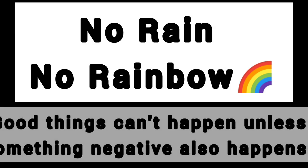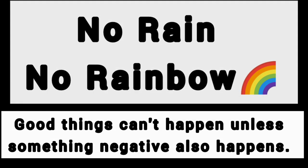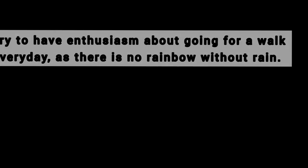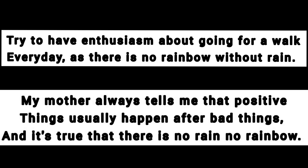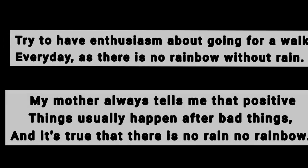The next expression is 'no rain, no rainbow' — and this one is my favorite. It means that good things can't happen unless something negative also happens. For example: 'Try to have enthusiasm about going for a walk every day as there is no rainbow without rain.' Or: 'My mother always tells me that positive things usually happen after or alongside bad things, and it's true that there is no rain, no rainbow.'